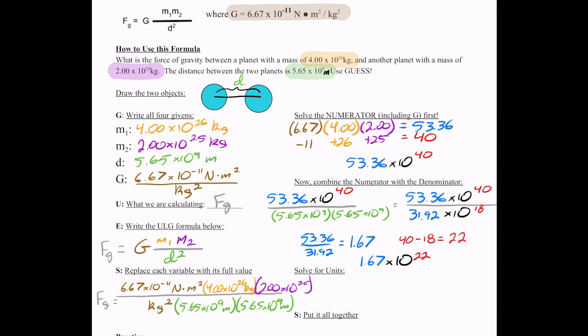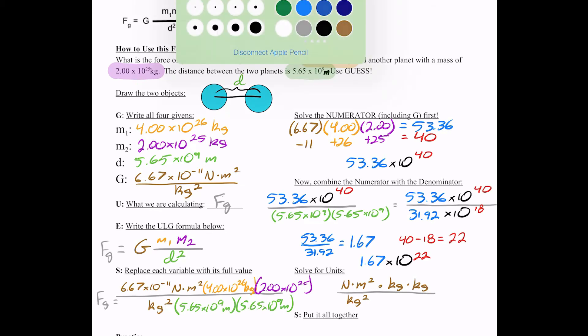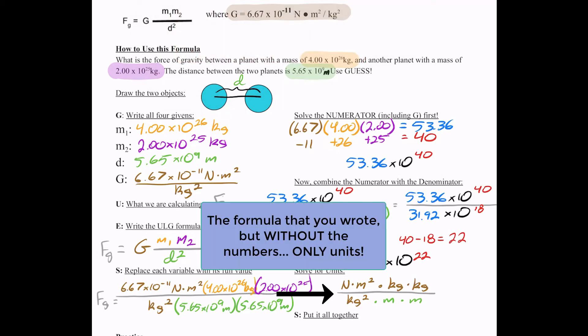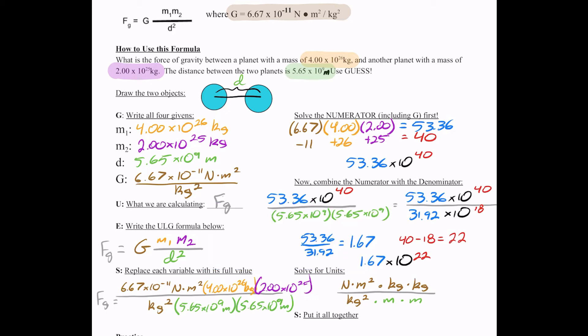Now we're almost done. Now we just have to do math on units. So we're gonna plug in the units into the formula and ignore the numbers. So all we're gonna be working with is units. We're gonna put the newtons times meters squared and that's gonna be over kilograms squared, times kilograms, times kilograms, and that's gonna be over meters times meters. This is basically our formula without the numbers. I just took all the numbers out. I left the units.